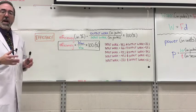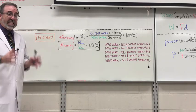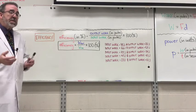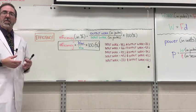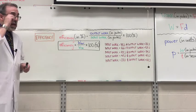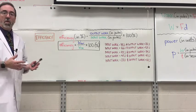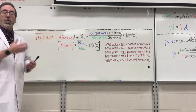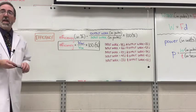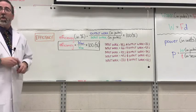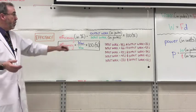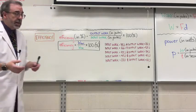The output work done by a machine will never exceed the input work, and this is basically due to friction. A lot of this energy is going to be lost in the form of heat, which can't be used first. This is why we use grease and oil on machinery to try to increase the efficiency. Efficiency of a machine is just the ratio of the output work to the input work. That's why we're going to make it as a percent.